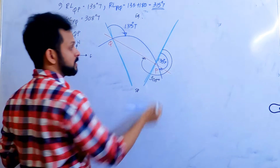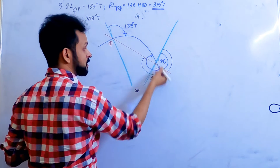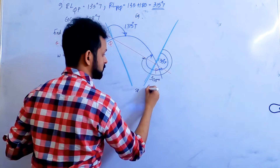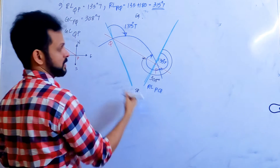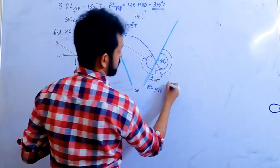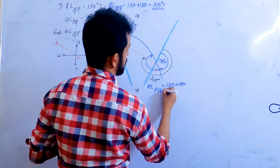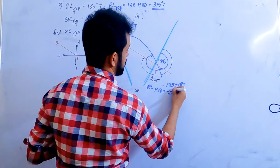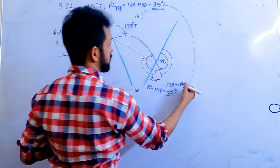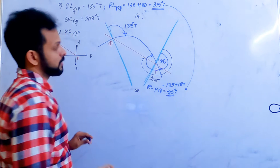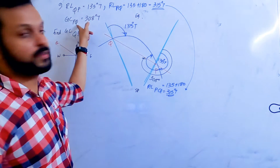Now once you have this, I can find the rhumb line track from P to Q, which is 315 degrees true. You can see the rhumb line track is actually more than the great circle track, which confirms we are in the southern hemisphere.